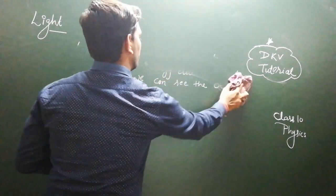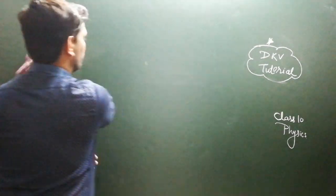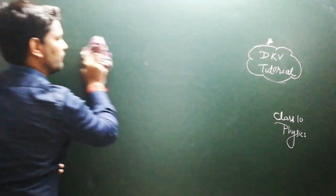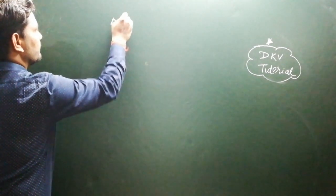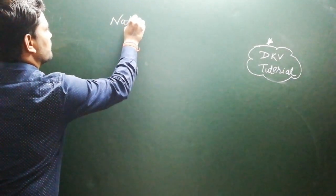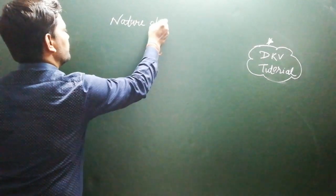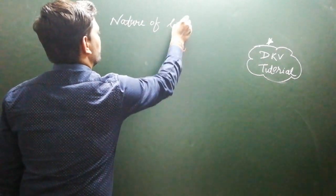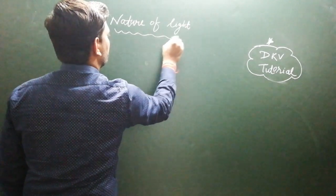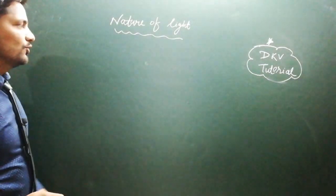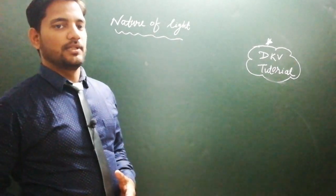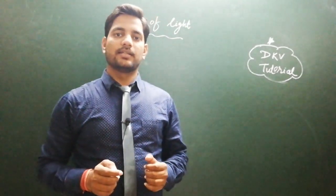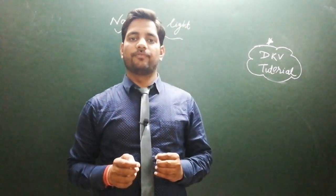The next question is: what is the nature of light? From studying the nature of light, we get different concepts. Some scientists say that light is made of waves, while others propose different ideas. Let's explore what the nature of light really is.